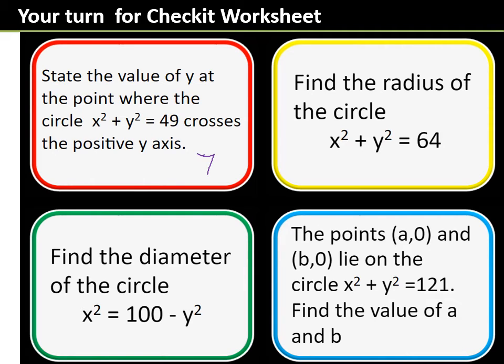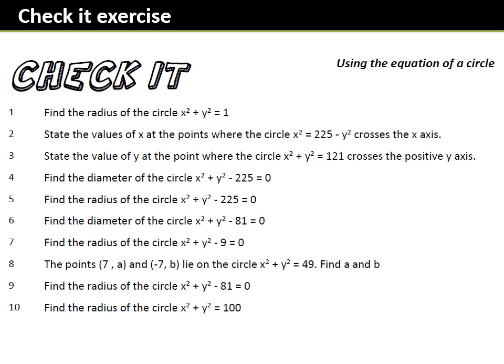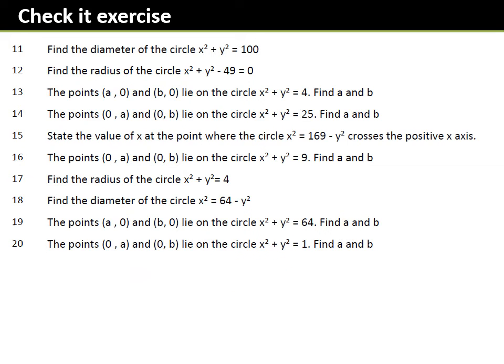Your turn — have a go at those ones. You'll get the answer 7 on the first one; the radius of the next circle is 8; the diameter of the circle with radius 10 is 20; and for the last one, y = 0 on both points, so a = 11 and b = −11. Now here's a check-it worksheet — 30 questions very similar to that, very quick-fire. Pause the video, jot down your answers, don't spend too long on these.